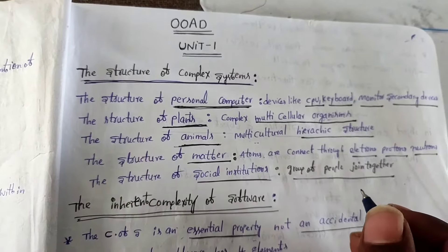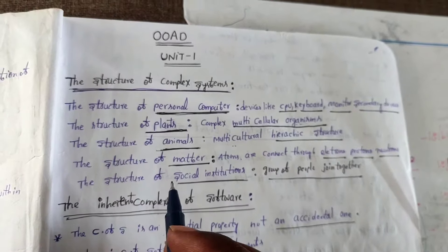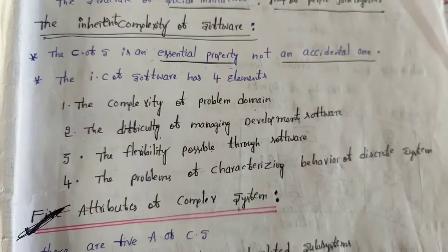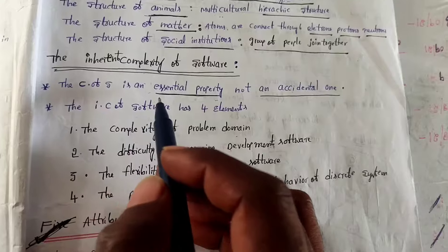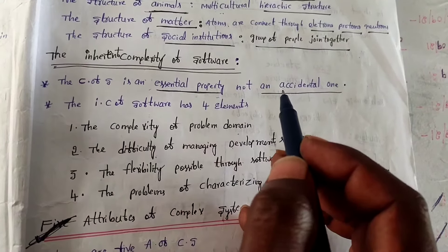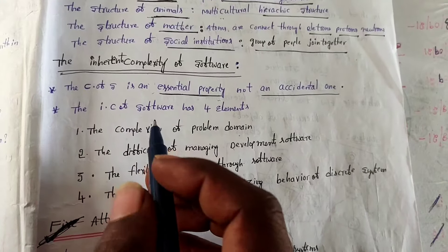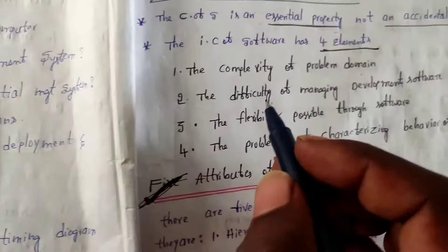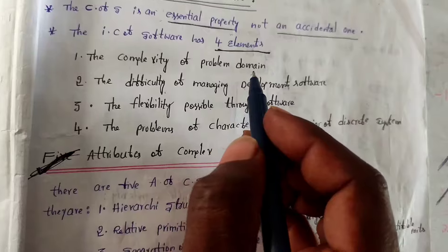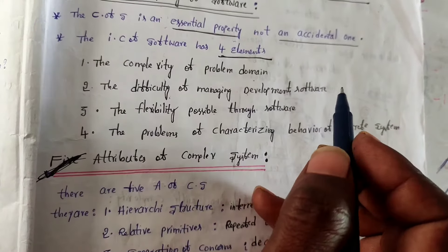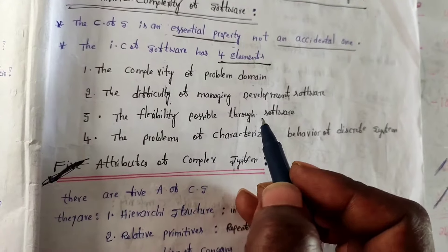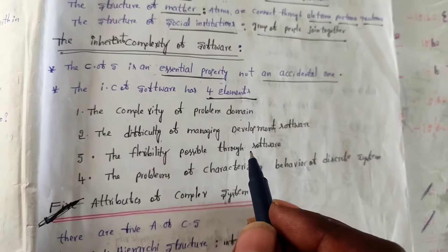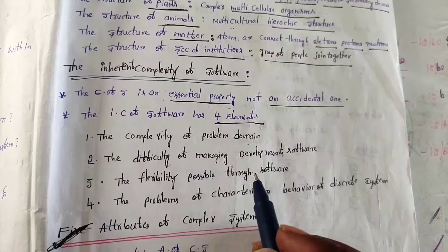The next topic is the inherent complexity of software. The inherent complexity of software is an essential property, not an accidental property. In software we discuss four elements: the complexity of the problem domain, the difficulty of managing developmental software, the flexibility possible through software, and the problems of characterizing behavior of discrete systems.